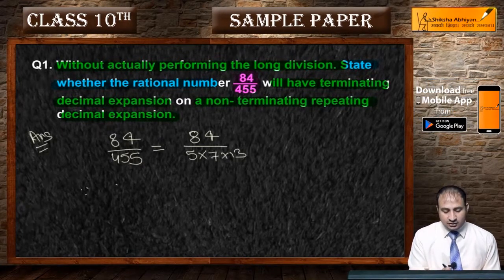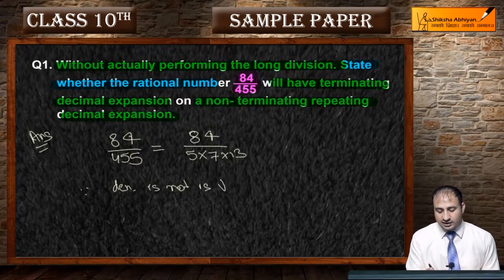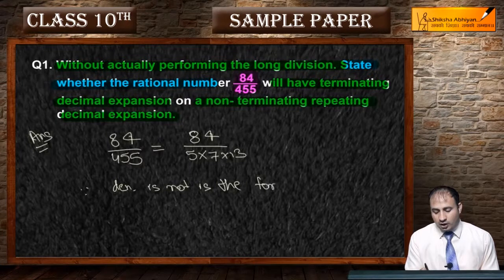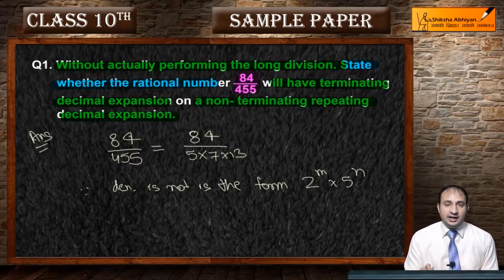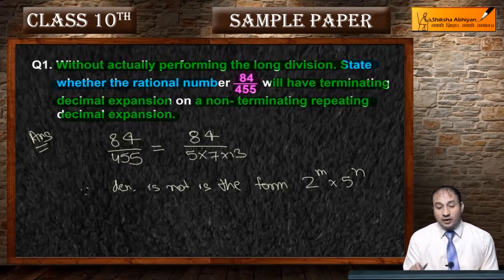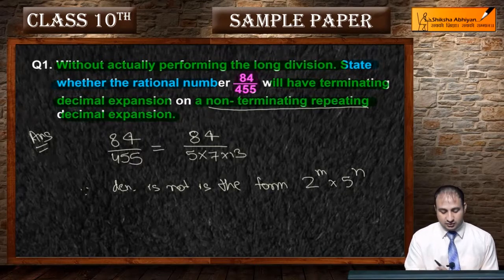Since the denominator is not in the form of 2 to the power m into 5 to the power n — is form ka nahi hai. Aur jab is form ka nahi hota hai, to usmein kya hoga? A non-terminating repeating decimal expansion hoga.